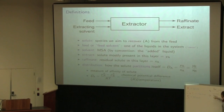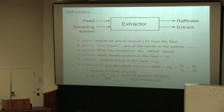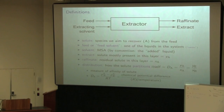Our solute moves from our feed over to the extract. What's left over then is our raffinate. Very often we'll take this raffinate stream, which still contains some solute but now less than what we started with in the feed, and we'll send this to a second stage. We'll re-contact it with solvent and try to extract further the residual solute left over in the raffinate. We may need a third or fourth stage, so we place them in sequence.